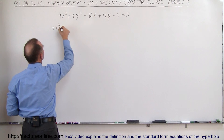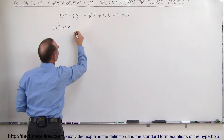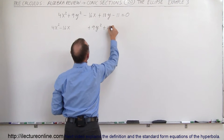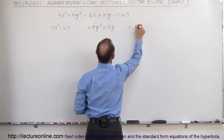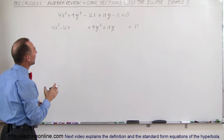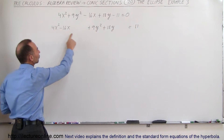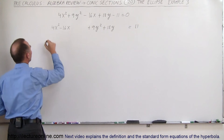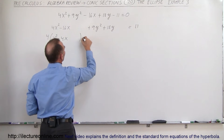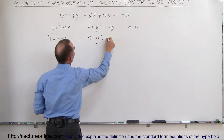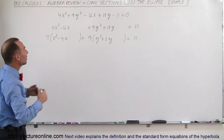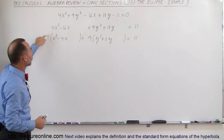So we have 4x-squared minus 16x, then we leave some space, plus 9y-squared plus 18y, and then equals positive 11 — we bring the negative 11 over to the right side. The next thing we want to do is factor out the coefficient in front of the x-squared term and the coefficient in front of the y-squared term. We end up with 4 times (x-squared minus 4x), plus 9 times (y-squared plus 2y), equals 11. So far we haven't changed anything, just written it in a slightly different form and factored out the 4 and the 9.